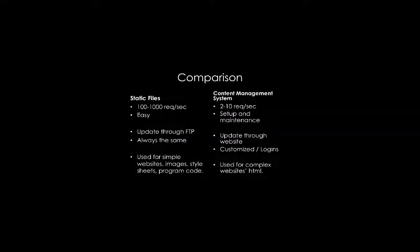A static file website is very fast and very easy. The problem is you have to manually copy it with an FTP program, and it's always the same for each user — so it's used for very simple websites, or to get images, style sheets, or program code onto a server. A content management system like WordPress is much slower, but it's a lot easier to manage from an end-user perspective. You can log into a website, change some things, and update it — and this is done for almost all complex websites you find online today.